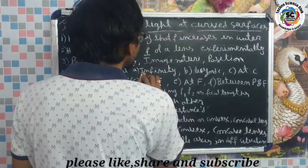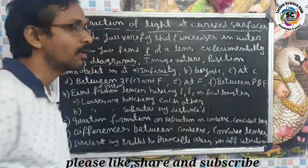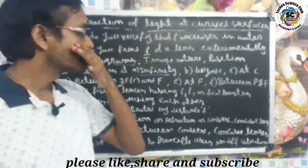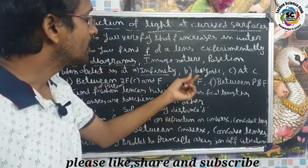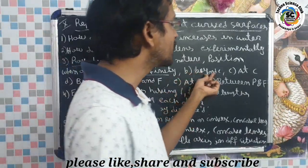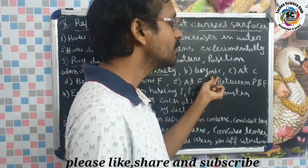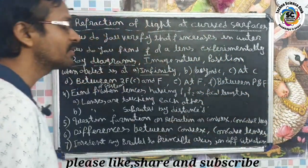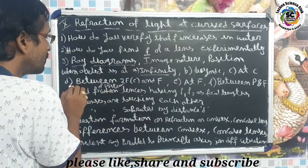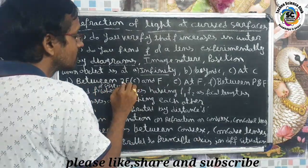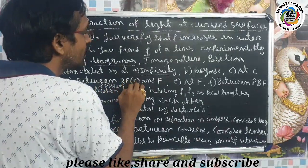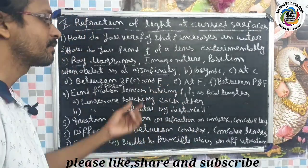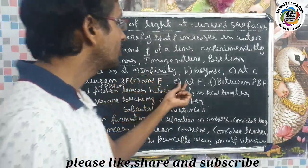The six ray diagram cases are: first, when object is at infinity; second, when object is beyond C; third, when object is at C (center of curvature); fourth, when the object is between the center of curvature 2F and focal point F. The image forms at the focal length, beyond C, or at other positions depending on the case.